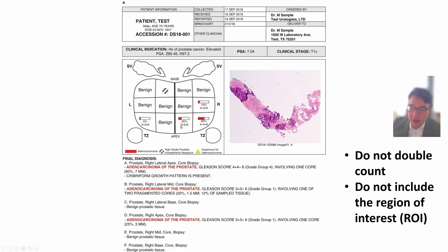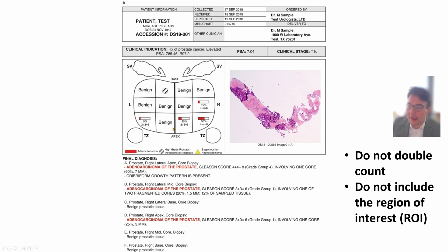Why do they report 3 plus 3? The needles are long and skinny, and what they're saying is they look at one part of the needle and then another part. Sometimes you'll have a more aggressive prostate cancer in one part of the needle and a less aggressive cancer in a different part. So they're reporting what percent of the needle had a 3 and what percent had another 3 — trying to quantify how much was the more aggressive versus less aggressive part.